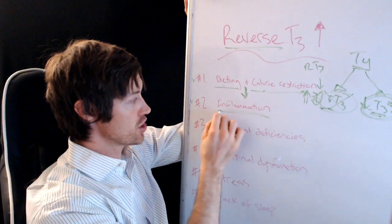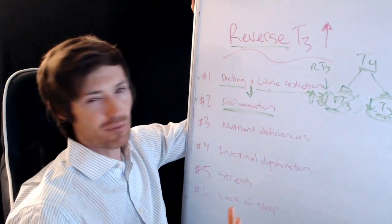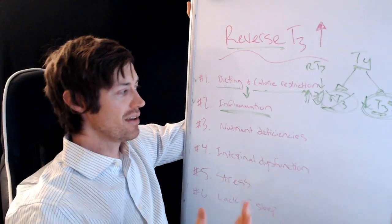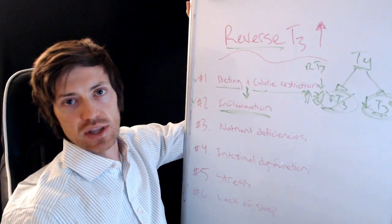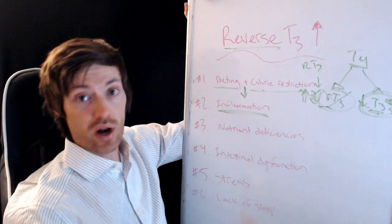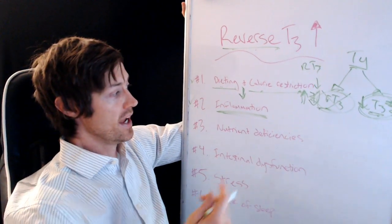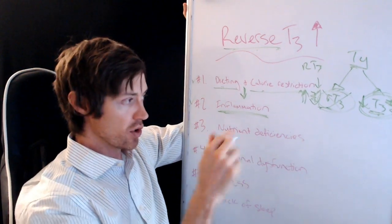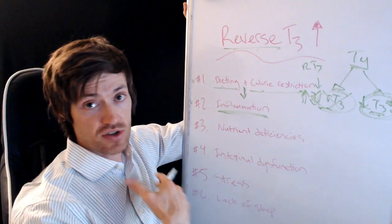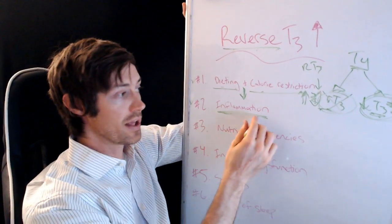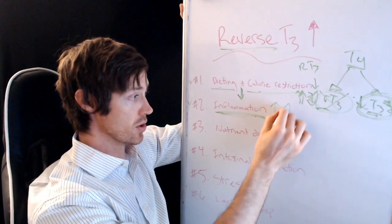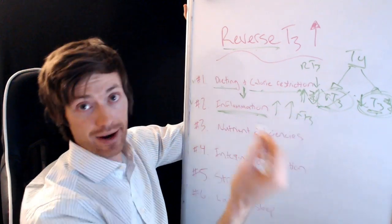So that's number one. Number two is inflammation. Anything that causes inflammation. And here I'm really talking about both cellular inflammation and systemic inflammation. I don't really need to convince you that inflammation in your body is a bad thing, but a lot of you struggle to understand where it's coming from and what causes inflammation and if you have it in your body or not. So really any type of inflammation, either cellular or systemic throughout your entire body, these all impact your body's ability to convert T4 into T3.